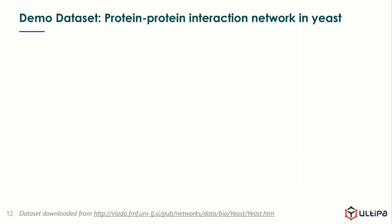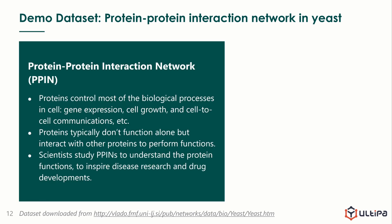Here comes the demo. One of the most studied biological networks is protein and protein interaction networks. Here is some background knowledge. Proteins control most of the biological process in cells, such as gene expression, cell growth, and cell-to-cell communications. Proteins typically don't function alone, but interact with other proteins to perform functions. Therefore, scientists study PPINs to understand protein functions, to inspire disease research and drug development.